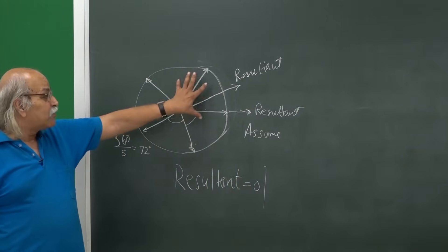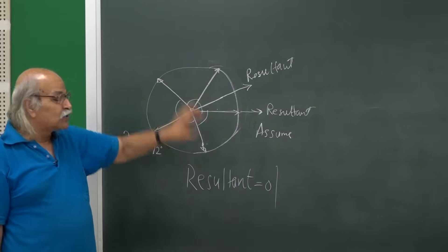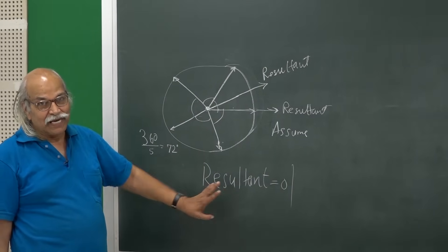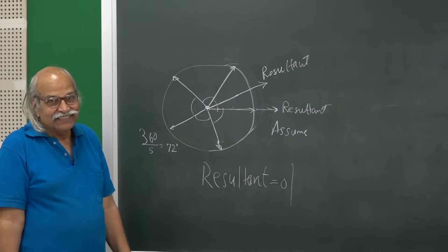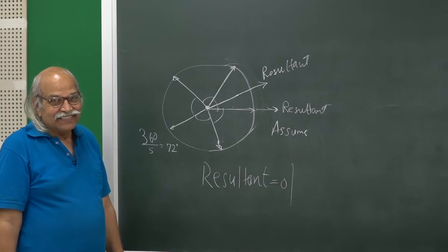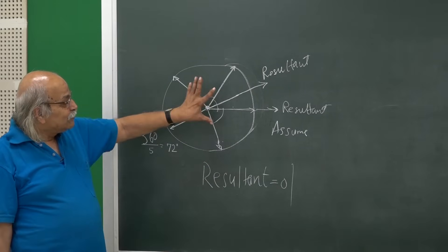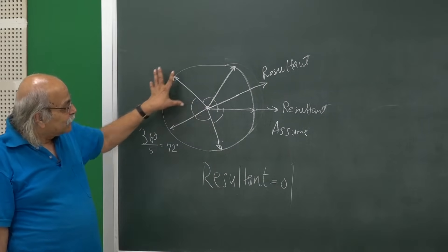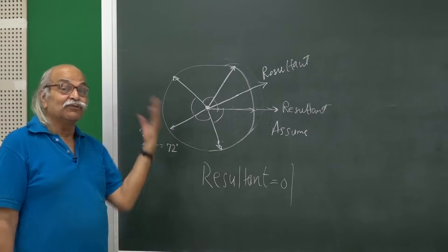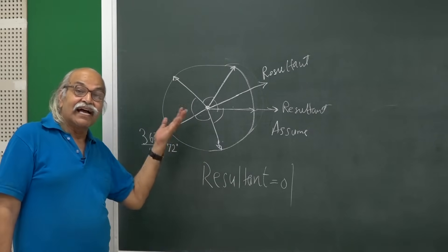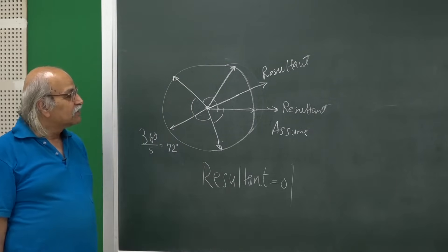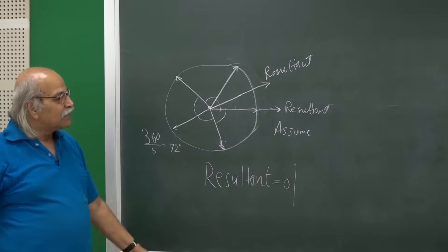This type of problem should not be solved by brute-force calculation. I am telling you to look at the symmetry and argue that the resultant has to be zero. This kind of symmetry argument works in many places.